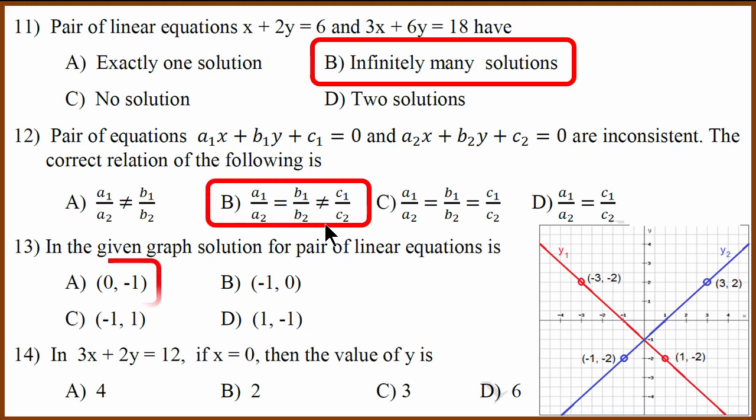In the third question they have given the point and we have to identify the point. The point is x is 0 because it is on the y axis and y is minus 1. So therefore the point is 0 minus 1. The last one they have given the value of x. They have given the equation. You can find the value of y by substituting. So if x is 0 substitute, you can show that y equals 6. The correct answer is D.